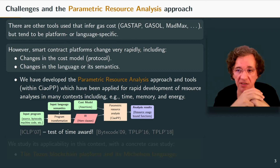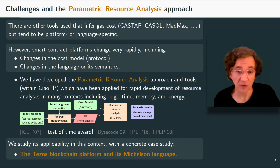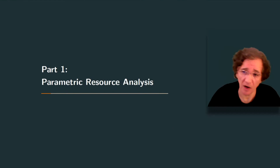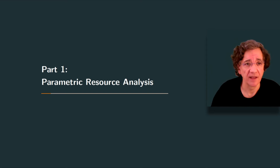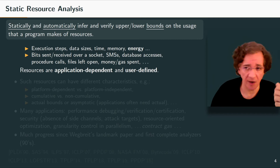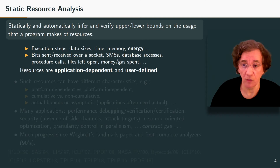We believe applying this method in this rapidly changing context would be a good idea. We study the applicability with a concrete case study: the Tezos blockchain platform and its Michelson language. The objective of resource analysis is to statically and automatically infer upper and lower bounds on the usage a program makes of resources. This includes execution steps, data sizes, time, memory, but also user-oriented resources like bits sent or received over a socket, SMSs, database accesses, procedure calls, files left open, and money and gas spent.